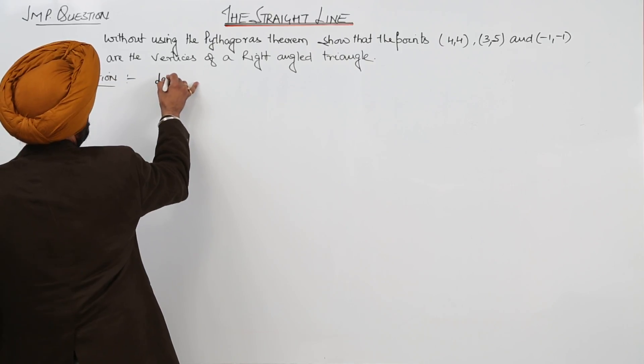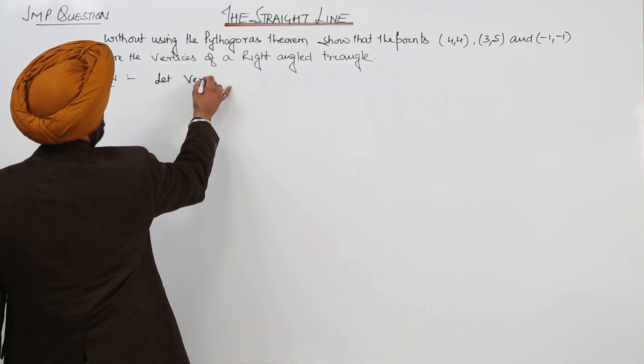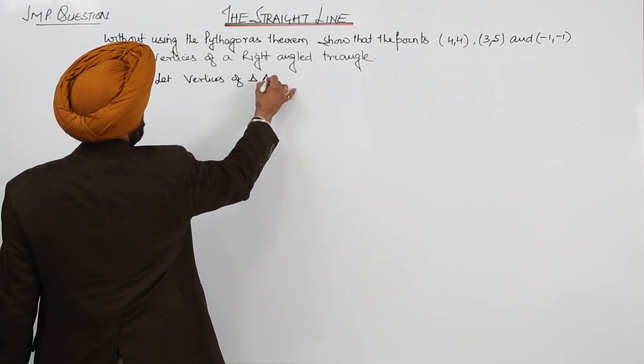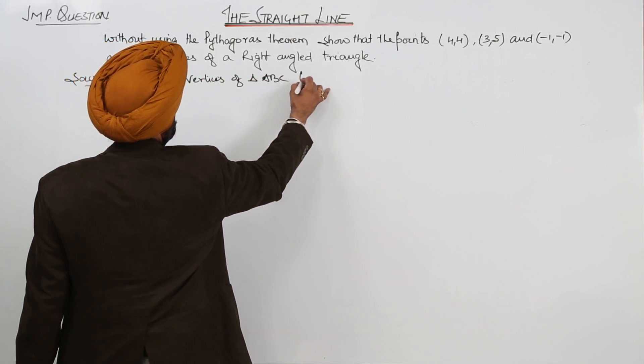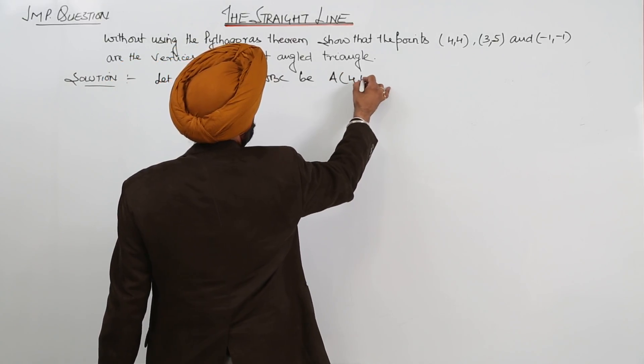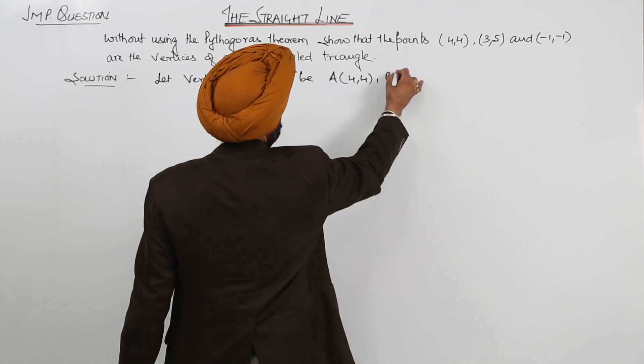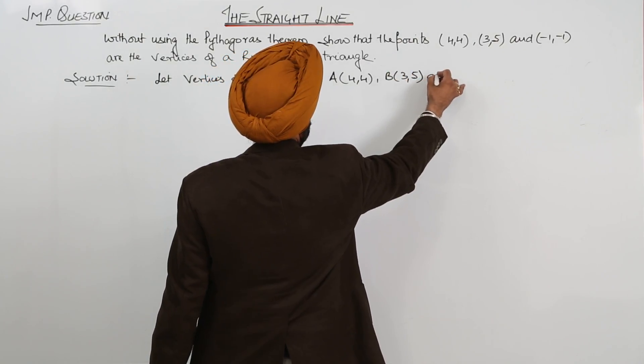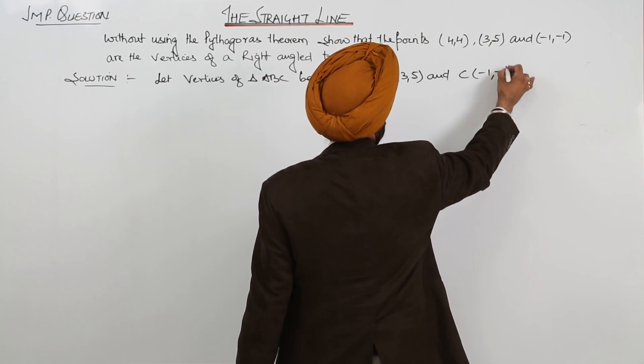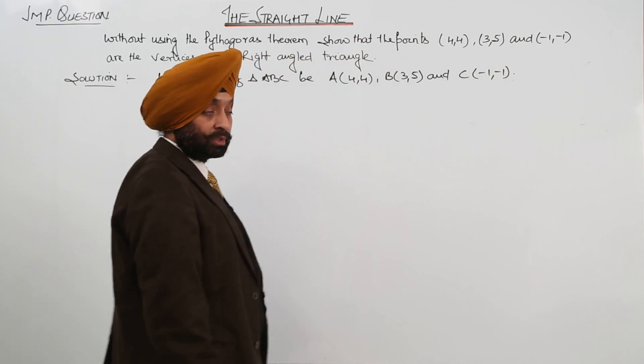Now, let vertices of triangle ABC be A(4,4), B(3,5), and C(-1,-1).